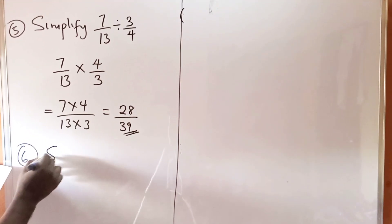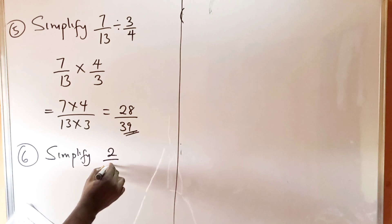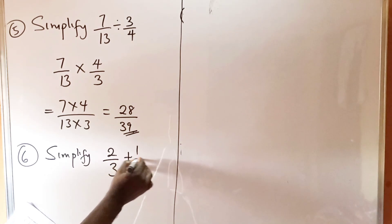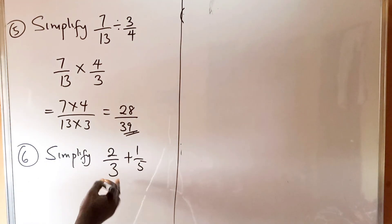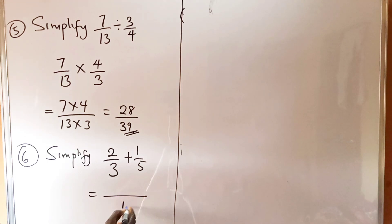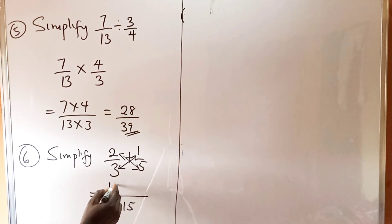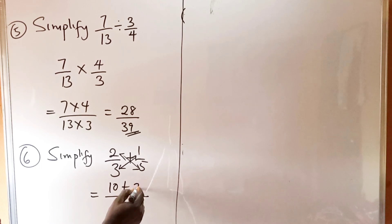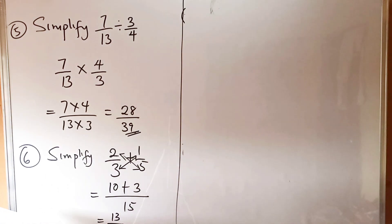Question number six asks us to simplify 2 divided by 3 plus 1 divided by 5. The LCM of 3 and 5 is 15. We multiply across: 2 times 5 is 10, plus 3 times 1 is 3, so that gives us 13 divided by 15. That is the answer — option A.